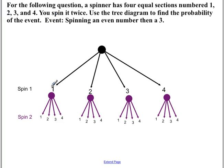Next question. For the following question, a spinner has four equal sections numbered 1, 2, 3, and 4. You spin it twice. Use the tree diagram to find the probability of the event. Event is spinning an even number, then a 3. So this is your first event right here. So your first event, or first spin, is right here. And your second spin is in this column.